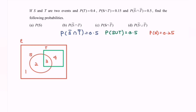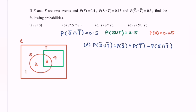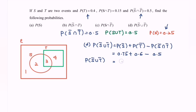For part D, we need P(S'∪T'). Using the addition rule: P(S'∪T') = P(S') + P(T') − P(S'∩T'). We have P(S') = 1 − 0.25 = 0.75, P(T') = 1 − 0.4 = 0.6, and P(S'∩T') = 0.5. So P(S'∪T') = 0.75 + 0.6 − 0.5 = 0.85.